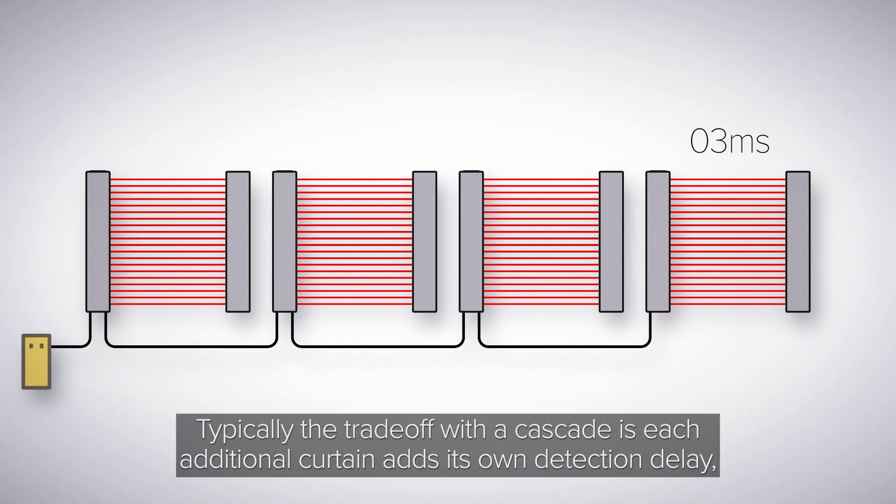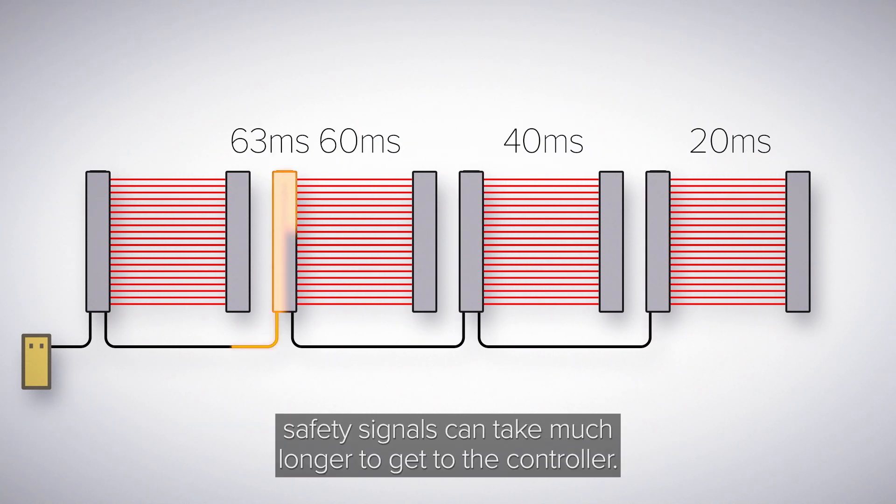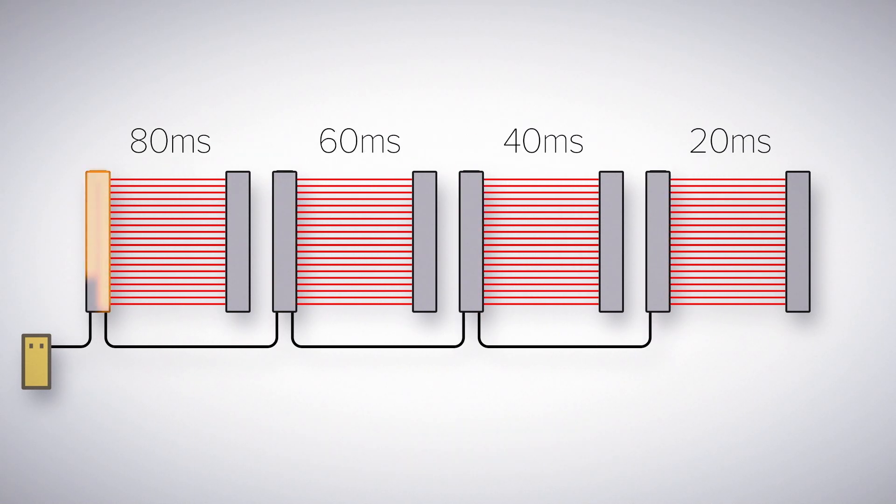Typically the trade-off with the cascade is each additional curtain adds its own detection delay, and as a result safety signals can take much longer to get to the controller.